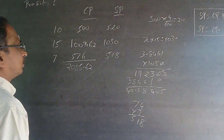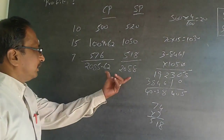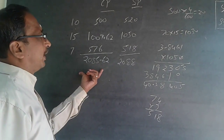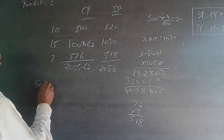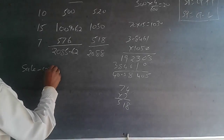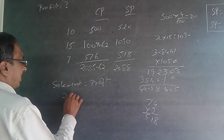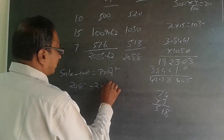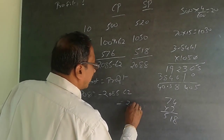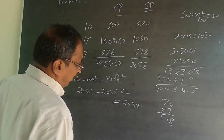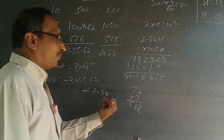Total selling price: 520 + 1050 + 518 = Rs. 2088. Total cost price: 500 + 1009.62 + 576 = Rs. 2085.62. Since the selling price is more than the cost price, he is making a profit. Profit = Sale minus Cost = 2088 minus 2085.62 = Rs. 2.38.